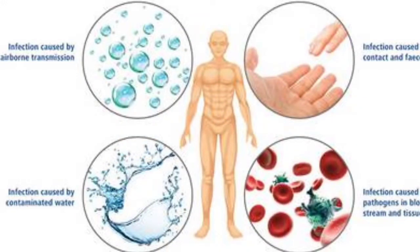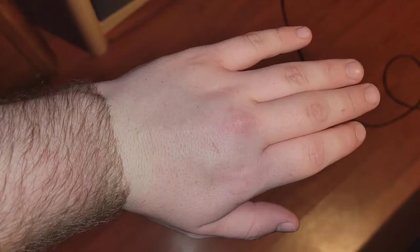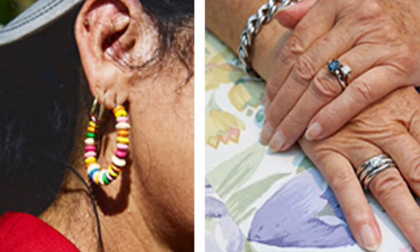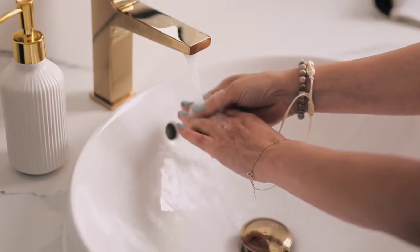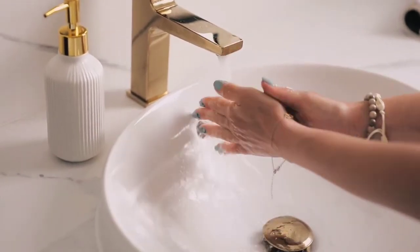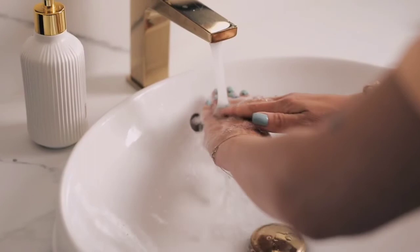Regarding hair coverings: harmful bacteria can be found on human hair, and any hair that touches food or food contact surfaces can carry bacterial contamination. Employees working in food processing areas must wear hair coverings or restraints; individuals with excessive body hair may need protective sleeves. Personal items such as jewelry, rings, and earrings should not be worn inside the facility. Employees should remove all unsecured jewelry and other objects that could fall into the food.